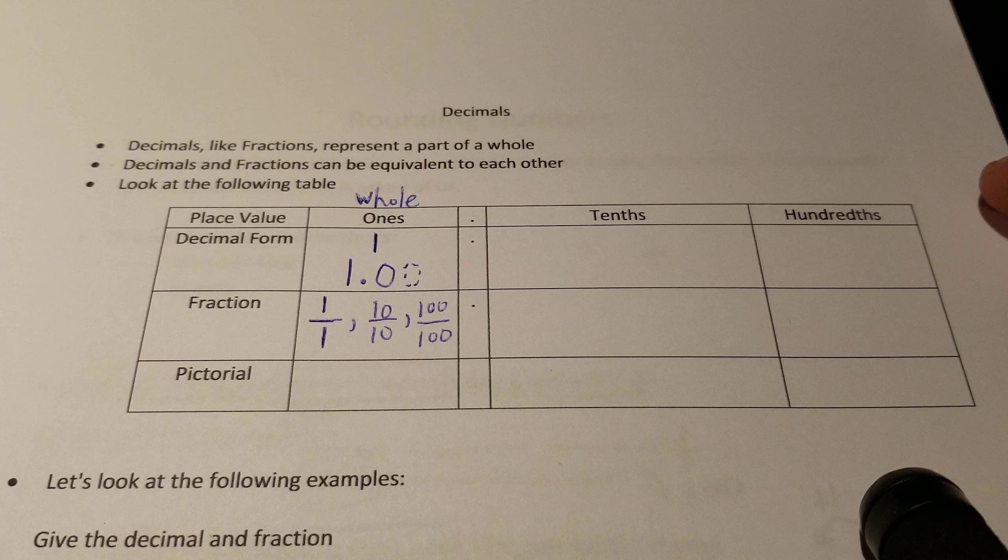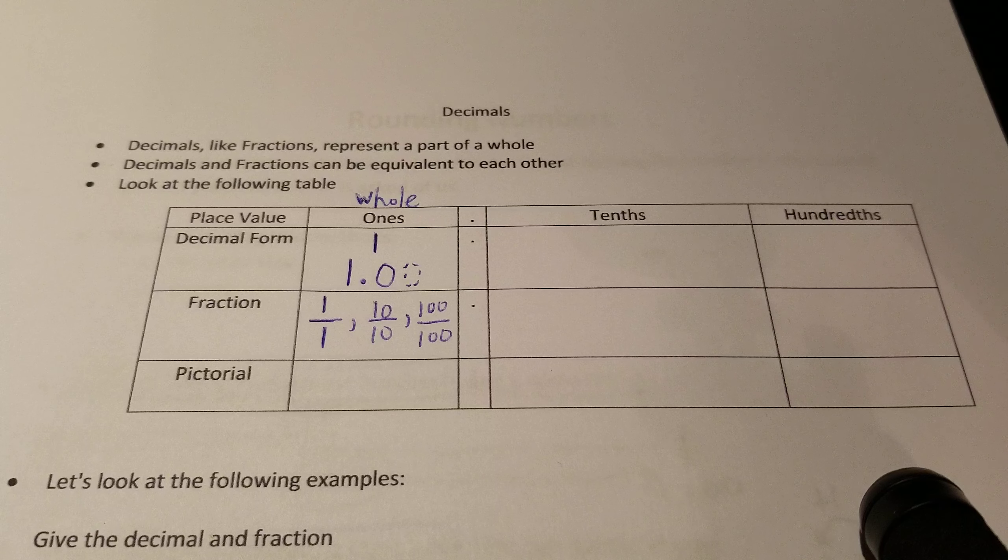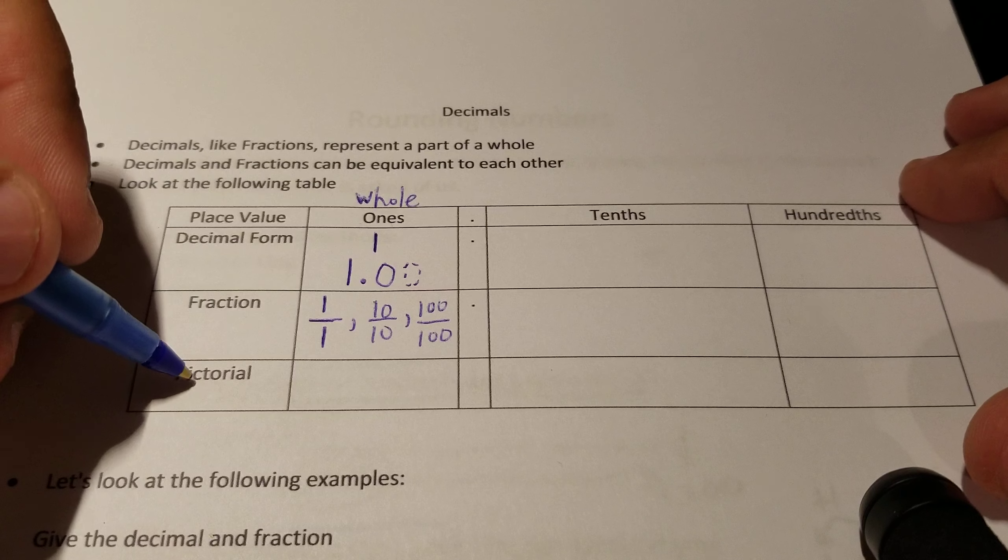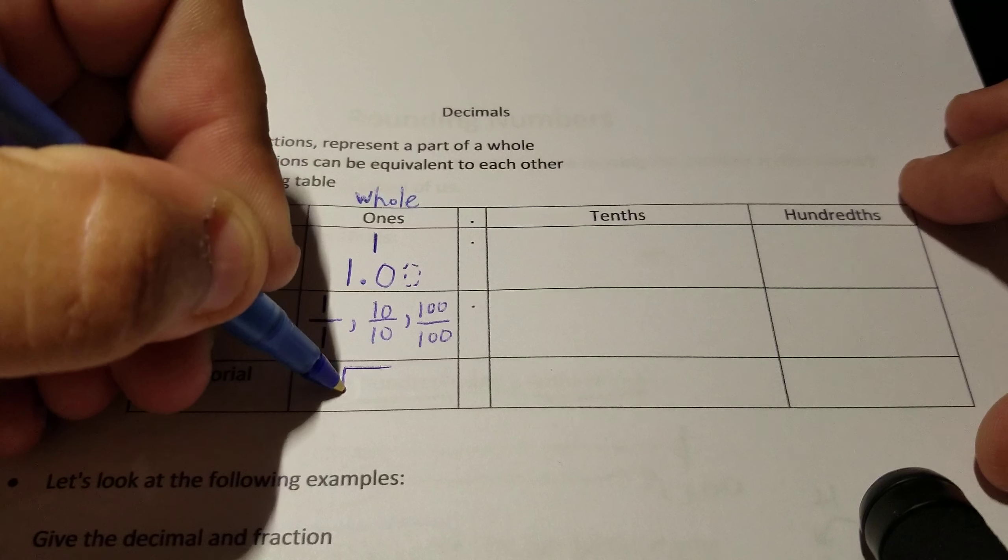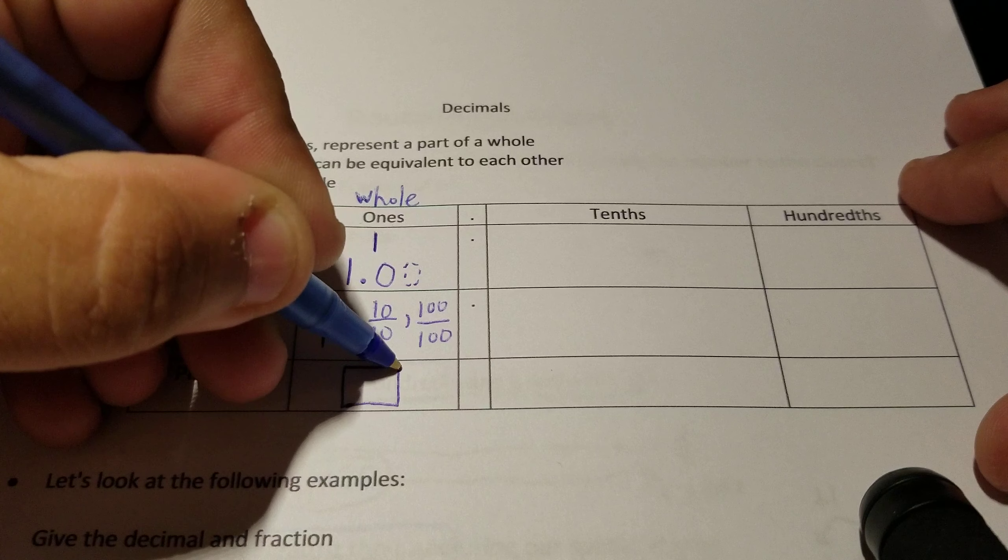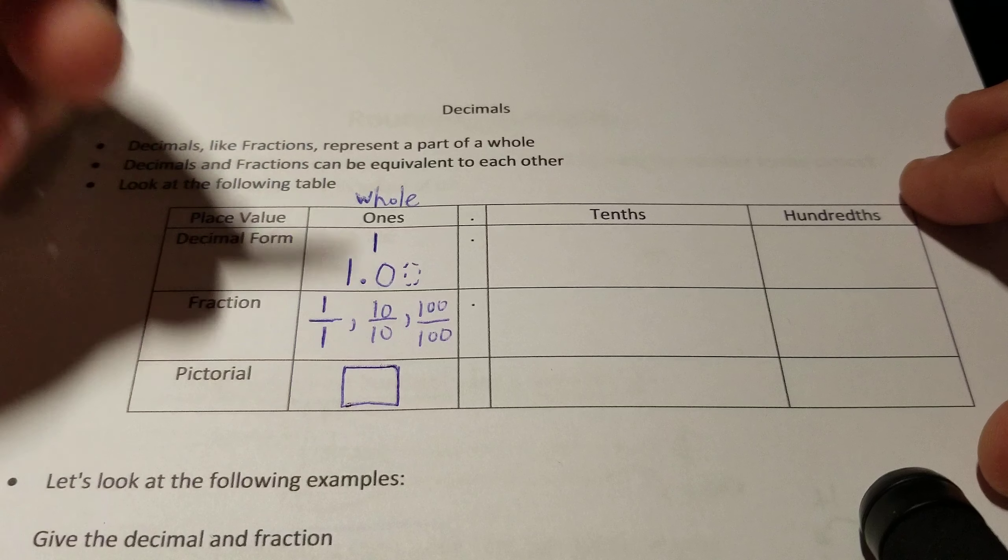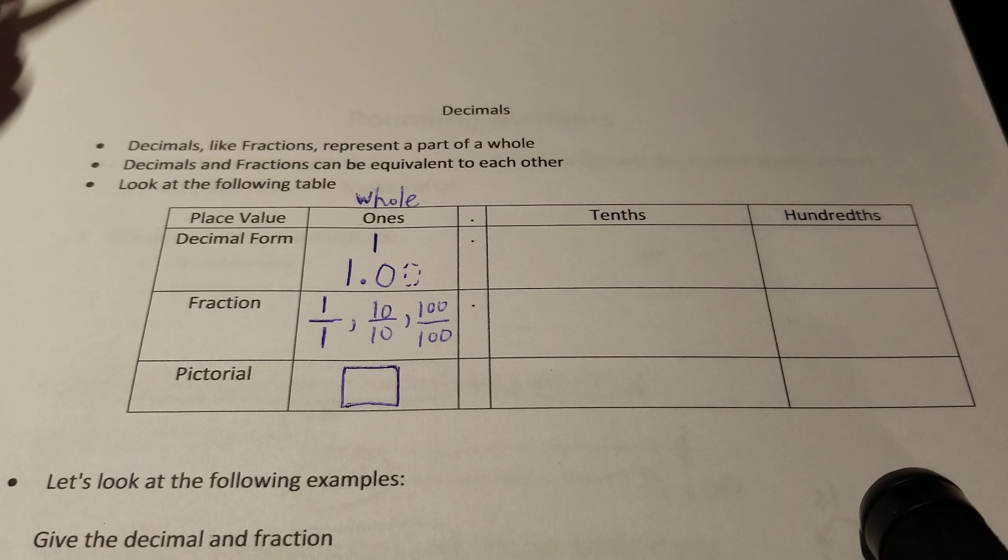Now when I talk about pictorials, I'm talking about base ten blocks. And we should know base ten blocks as the one hundred flat, the ten rod, and the one unit. When looking at pictures, the one hundred flat, when it comes to decimals, now represents one whole.